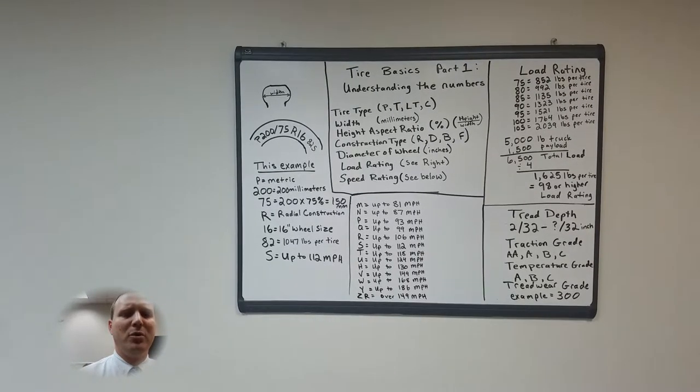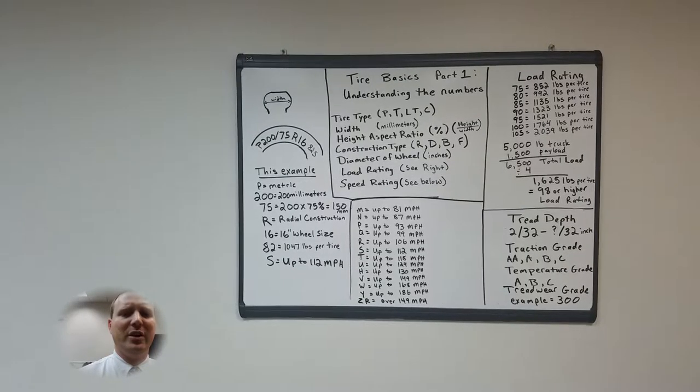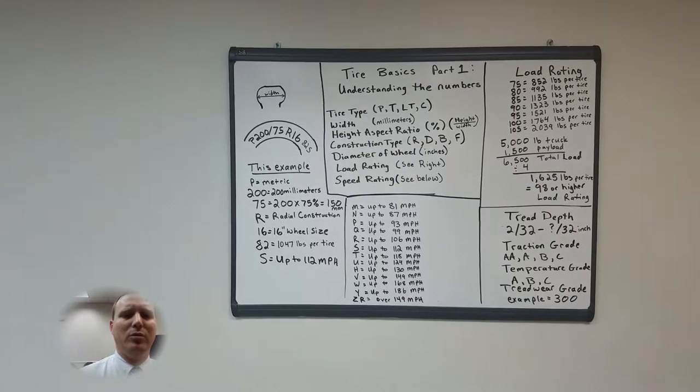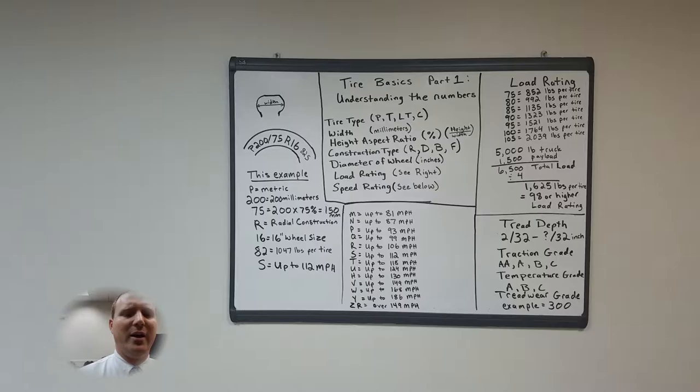In this example we're using a P200 75 R16 82S tire size. The P is the tire type which stands for P metric. It is the most commonly used tire type in the US.